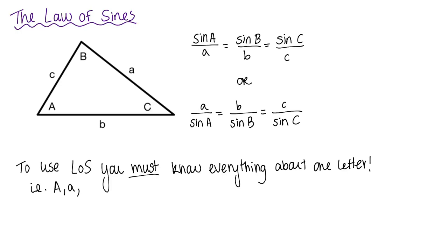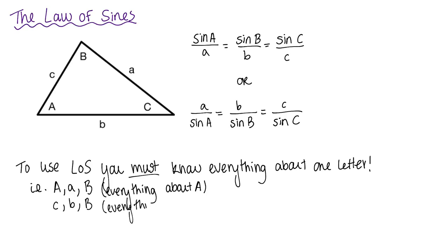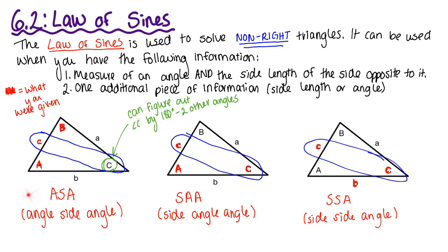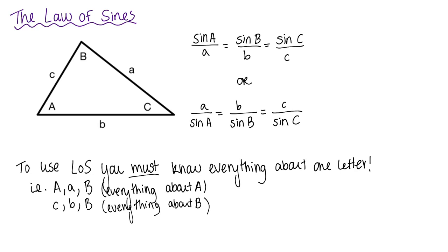For example, if you have angle A, side a, and angle B, that's fine because you know everything about A. Or if you have side c, side b, and angle B, that works because you know everything about B. I personally don't think in terms of ASA or SAA — I only think: do I have all the information about one letter? That's when I know I can use law of sines. Let's do an example.